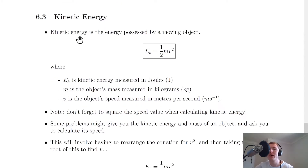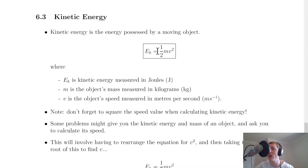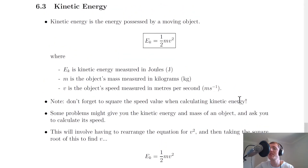Next we have kinetic energy, which you should also remember from National 5. Kinetic energy is the energy possessed by a moving object — any object in motion will have kinetic energy. The equation is Ek = ½mv², where Ek is kinetic energy in joules, m is mass in kilograms, and v is speed in metres per second. You get this, along with the other two equations, on the relationship sheet in the exam.